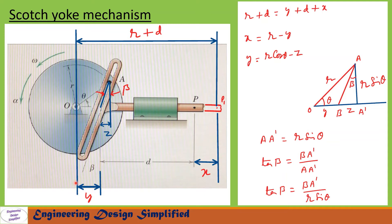From the diagram we can write: r + d = y + d + x. In this equation d gets cancelled, so we get x — the displacement of point P — equal to r minus y.